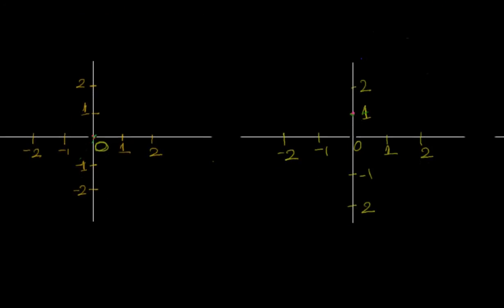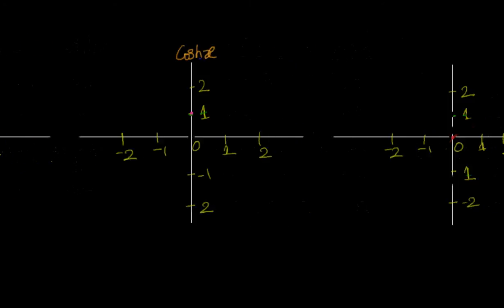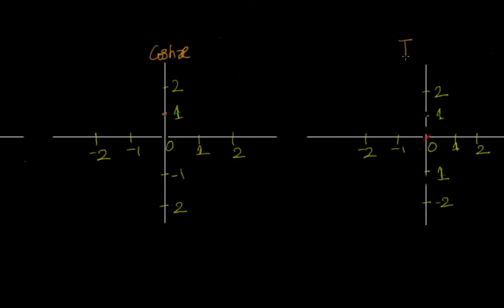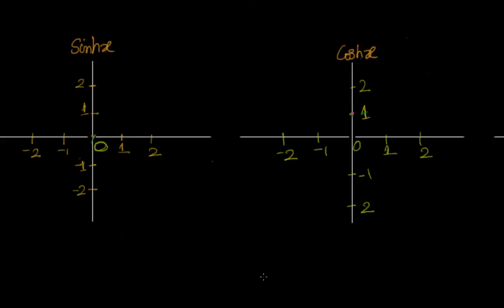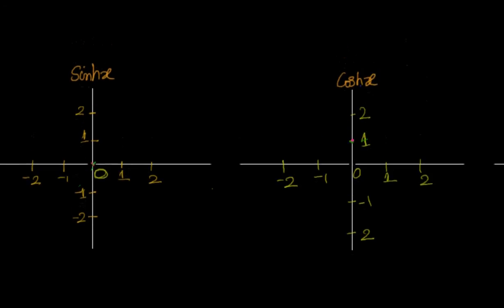Let us take them one after the other. We will use this for sine, this for cos, and we have tan here. We already have the information about what is hyperbolic sine of x, so we can go ahead and do that.